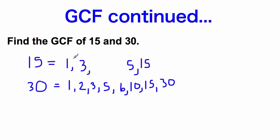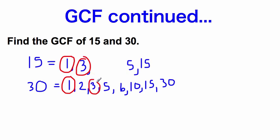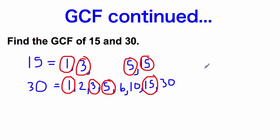Now let's find the common factors — what numbers are on both lists? There's a 1 on both, a 3 on both, a 5 on both, and a 15 on both. So what is the largest number that was on both lists? The GCF of 15 and 30 is 15.